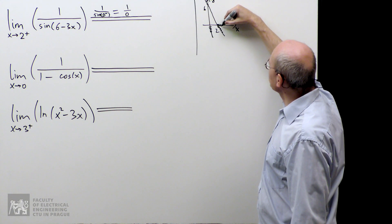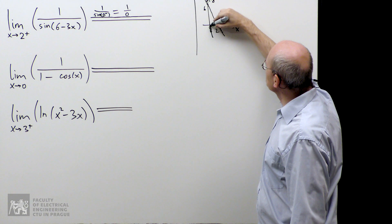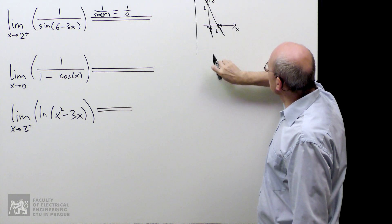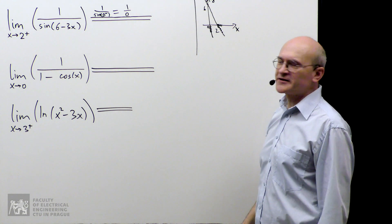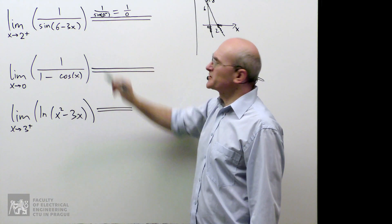As we approach number 2 with x, the values approach number 0, and they approach from below, from negative numbers. So indeed, this 0 is a negative 0.